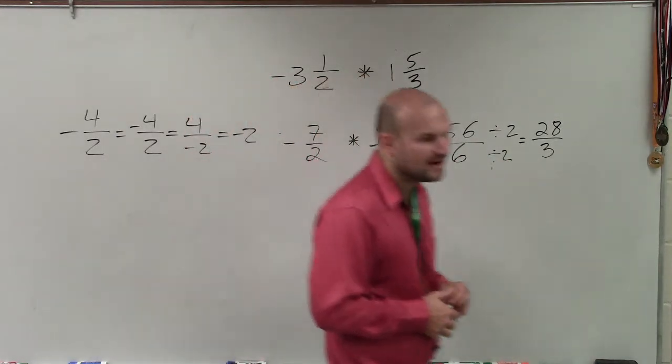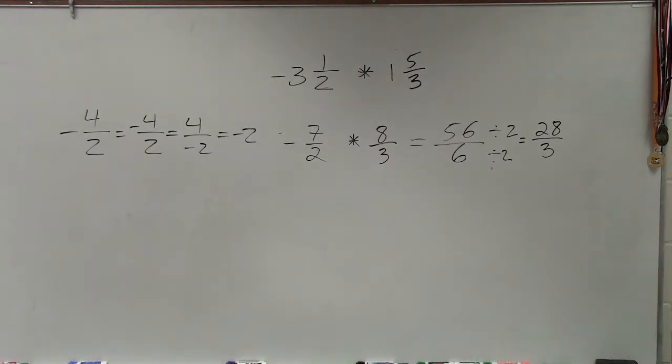So whenever simplifying, if you don't know an initial number that divides into the top and bottom, my recommendation is to look to see if it's even. If it is even, divide by 2, right? Because that's the definition of even numbers, that they're divisible by 2.